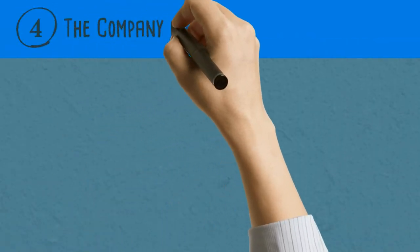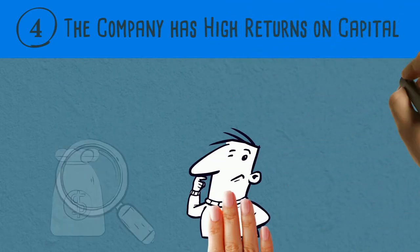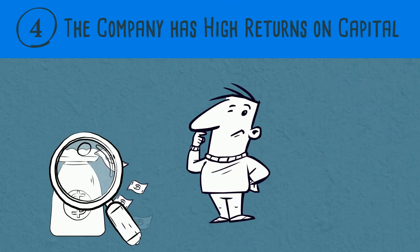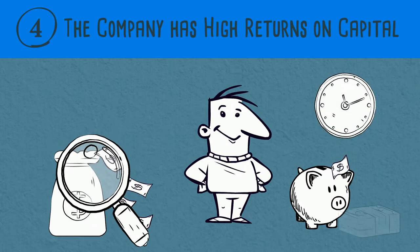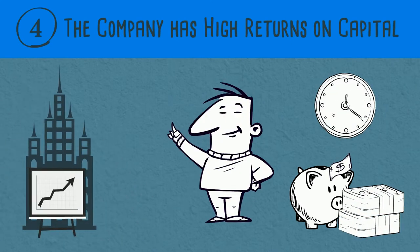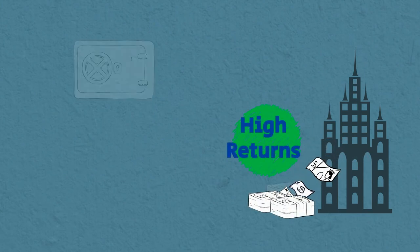Number 4: The Company Has High Returns on Capital. Once again, you have to go through the numbers. The ability of a company to generate returns over a long period of time is determined by the returns on capital the company generates. The best companies are those with high returns and low debt rate.